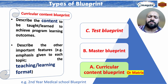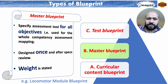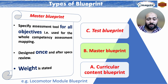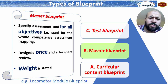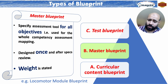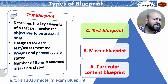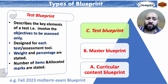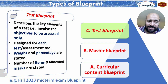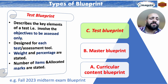For example, the second-year medical school blueprint for the whole year program. Next, the master blueprint is specified for all of the objectives per module or block, such as the locomotor module blueprint. It is designed once and reviewed quietly after the specs are set, and the weightage must also be stated. Finally, the test blueprint is very specific for a certain test or topic — for example, the 2023 mid-term exam blueprint. It describes the key elements of that specific test, the assessment designed for each assessment tool, and the weightage, percentage, and number of items allocated.